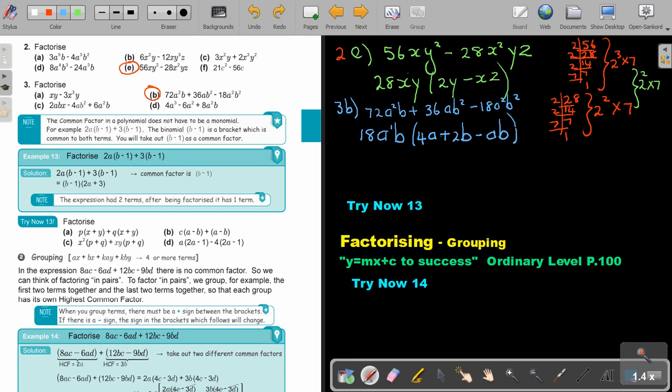And then the last one I want to show you. Sometimes, although this is just 2 terms. But do you see that the brackets are exactly the same? So, if you look at this one, you take out the bracket as a common factor. And then you still divide. So, 2A is left, 2B. The common factor in a polynomial does not have to be a monomial. For example, this is what I'm showing you here. So, it can be a bracket. It's a bracket which is common to both terms, which we'll take out then.